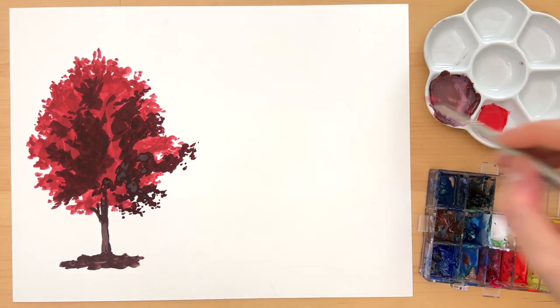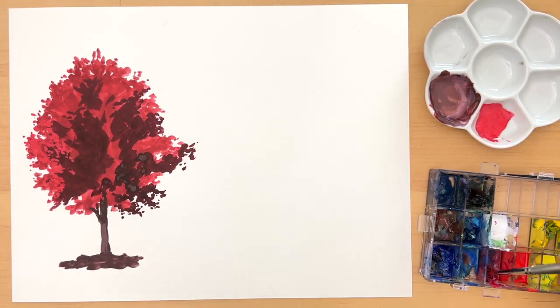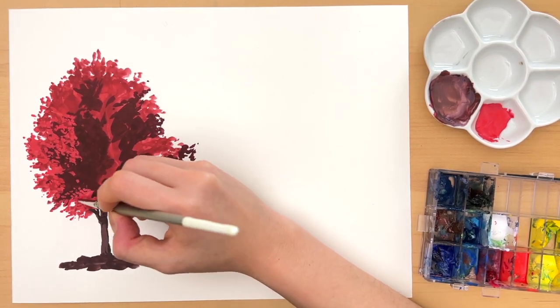Now after I finish marking down the shadow shape for the tree, I'm mixing a color that's slightly lighter than my base color. I'm going back in to paint some of the leaf texture on the tree.